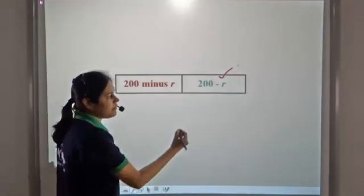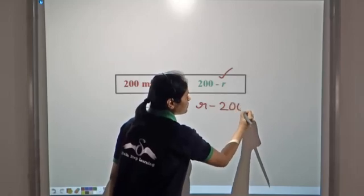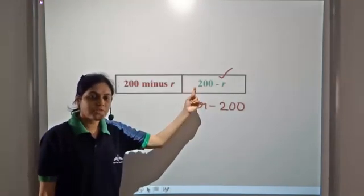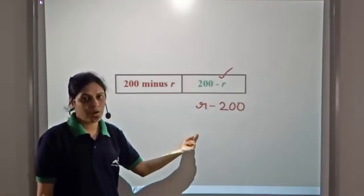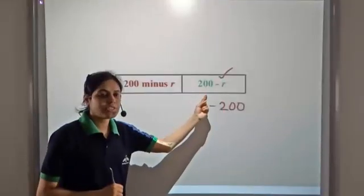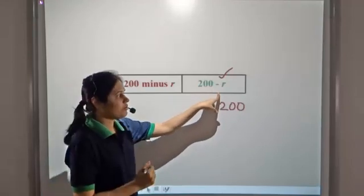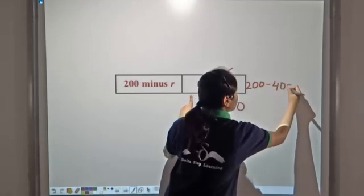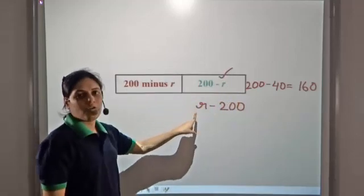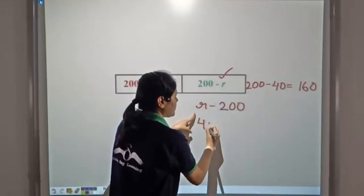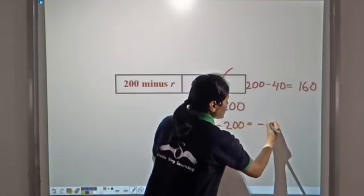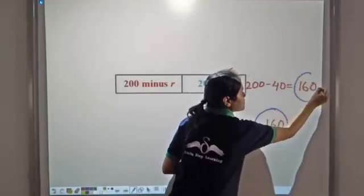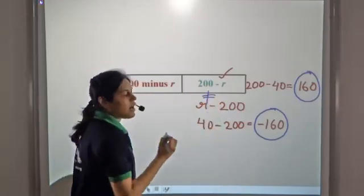Now is two hundred minus r the same as r minus two hundred? No, it is not. Here we are subtracting r from two hundred, and there we are subtracting two hundred from r. For example, if you spend rupees forty on rides, then two hundred minus forty equals one hundred sixty, whereas forty minus two hundred equals minus one hundred sixty. These two quantities are not equal, so the order matters in subtraction.